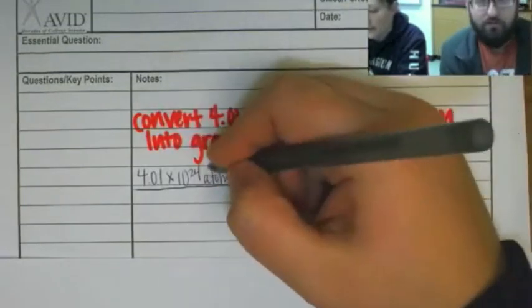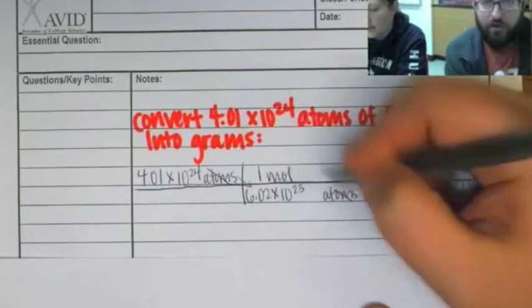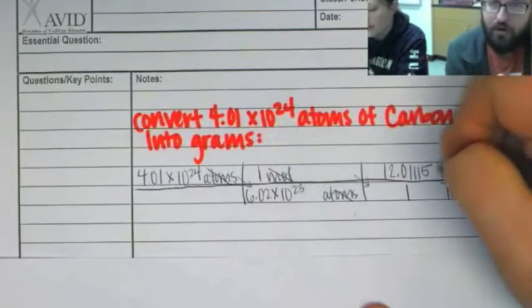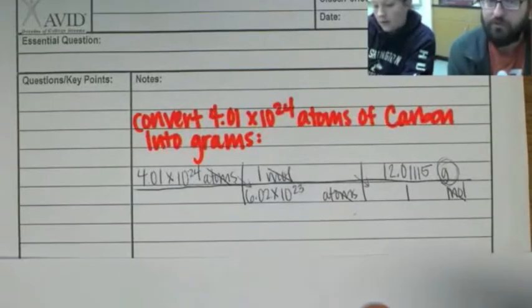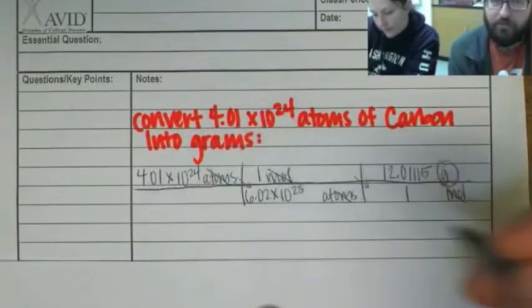And I can double check because I can cross out atoms because they cancel. Uh-huh. I can cross out moles because they cancel and I end up with grams. And that's what I want. Right. So I just got to do the math now. Right. So it's just multiplying across the top. Multiplying across the bottom and dividing the top by the bottom.